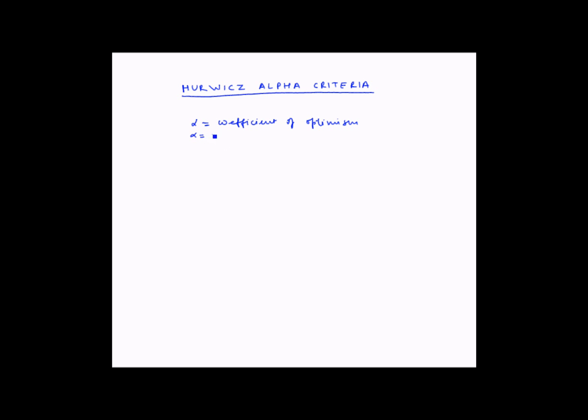If alpha equals 0, that represents extreme pessimism. If alpha equals 1, it represents extreme optimism. And if alpha equals 0.5, that represents neutralism. Hence, in this criteria, setting the value of alpha is key to the final decision.